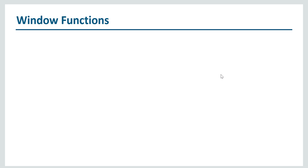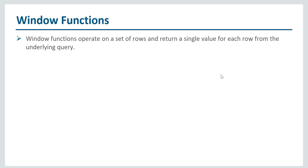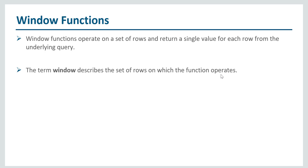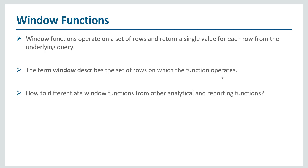So what are window functions? Window functions operate on a set of rows and return a single value for each row from the underlying query. The term window describes the set of rows on which the function operates. The over clause is used to differentiate between a window function and other analytical functions.